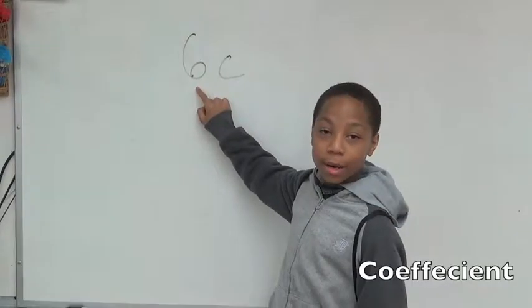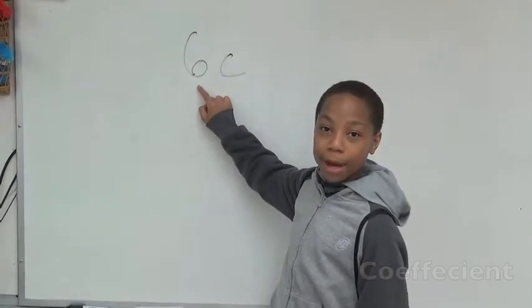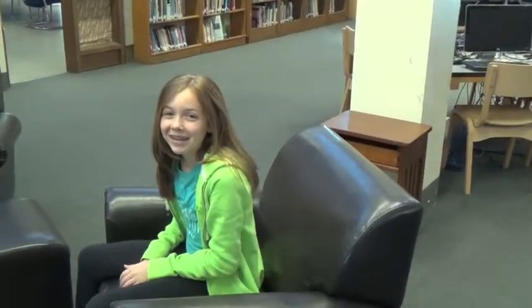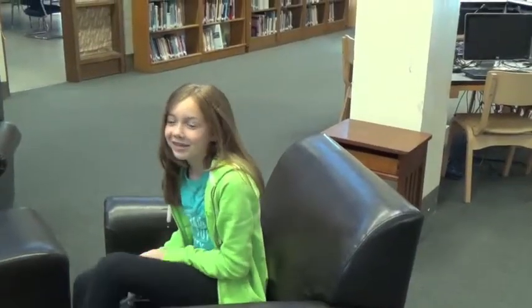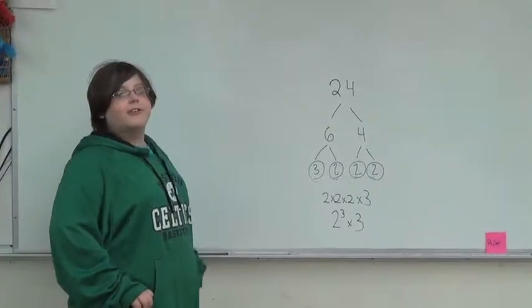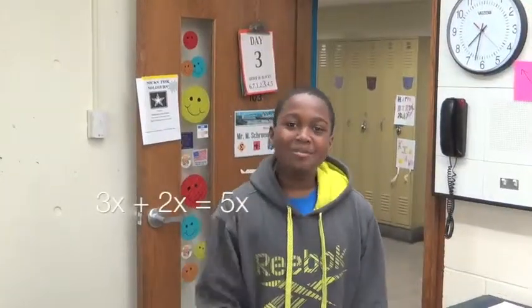A variable is a number that you don't know what it is, such as a letter. A coefficient is a number multiplied by a variable. A prime number only has two factors. All prime numbers are used for prime factorization.